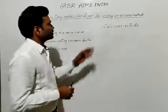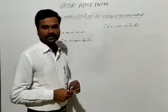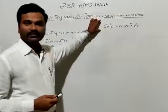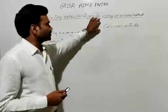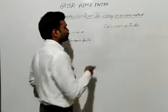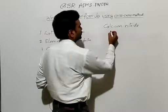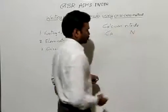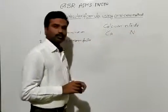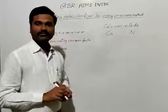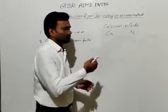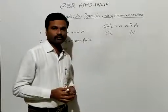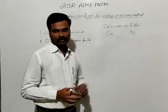Let us see this by using a simple example — calcium nitrate. From the name, we can identify that this compound is formed from two elements: calcium and nitrogen. From these two, let us find which is forming the positive ion and which is forming the negative ion. This can be determined based upon its electron configuration.